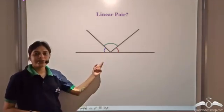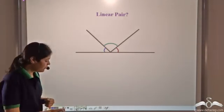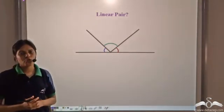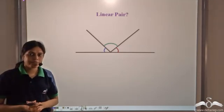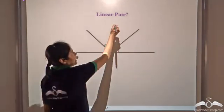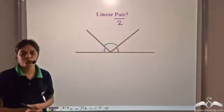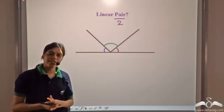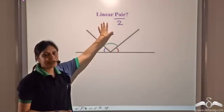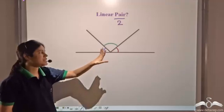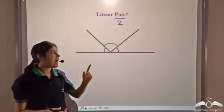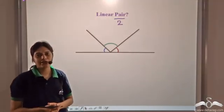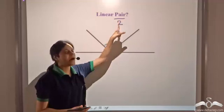Now look at these three angles. They lie on a straight line — but do they form a linear pair? No. The word 'pair' stands for two. We need exactly two adjacent angles that add up to 180 degrees to form a linear pair. In this case, we have three angles. Although they add up to 180 degrees, we cannot call them a linear pair, because a linear pair means exactly two angles.